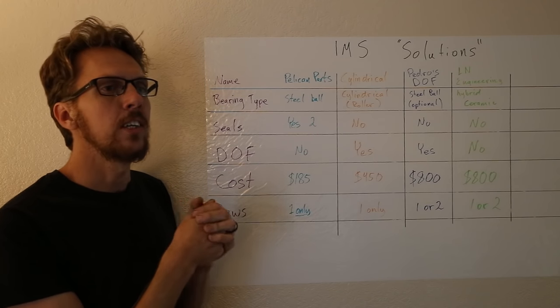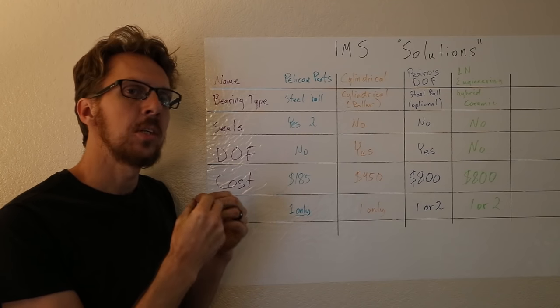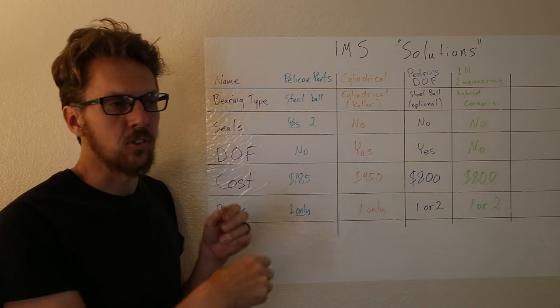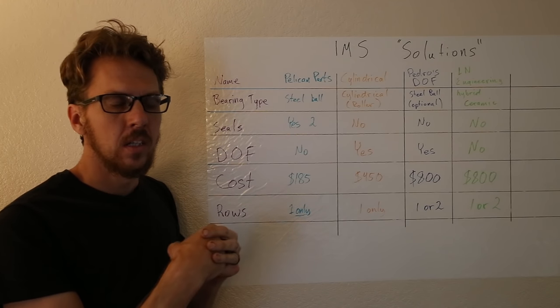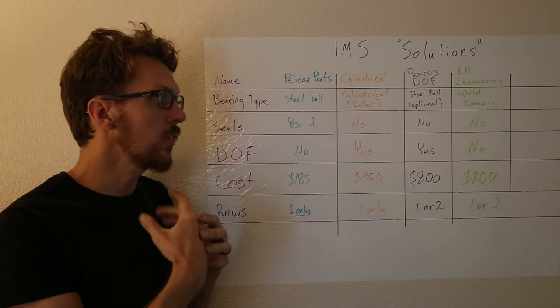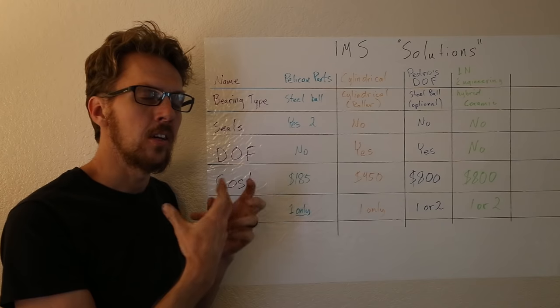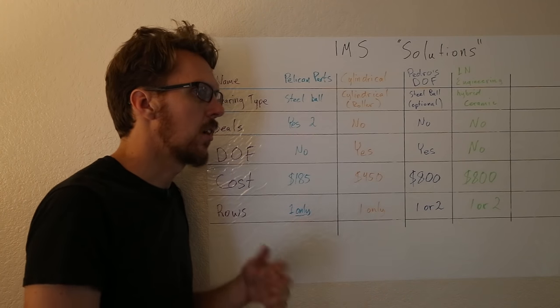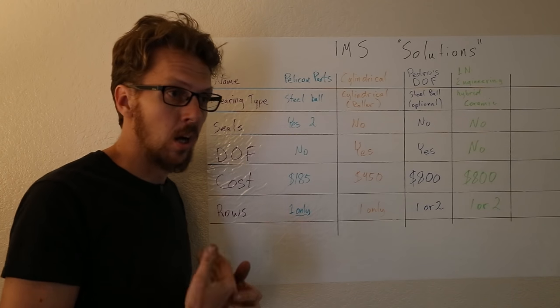Alright, so time to talk about the various solutions out there for the intermediate shaft bearing on the 986 Boxster and the 996 911. There are several aftermarket kits for these intermediate shaft bearings and I thought I'd go through them all, talk about their various features and then explain what I chose to do on my car.